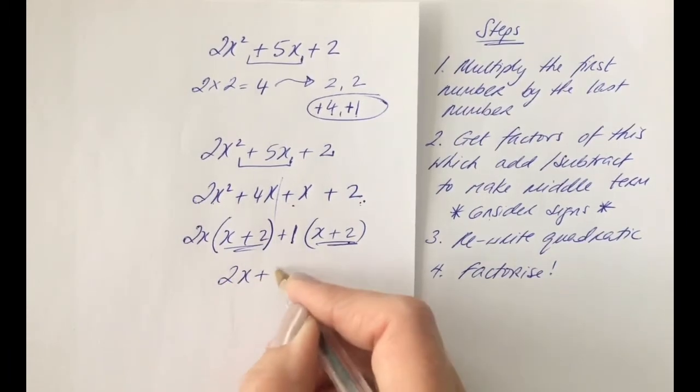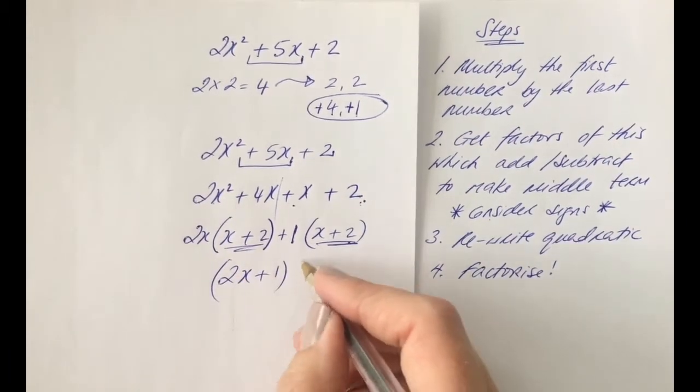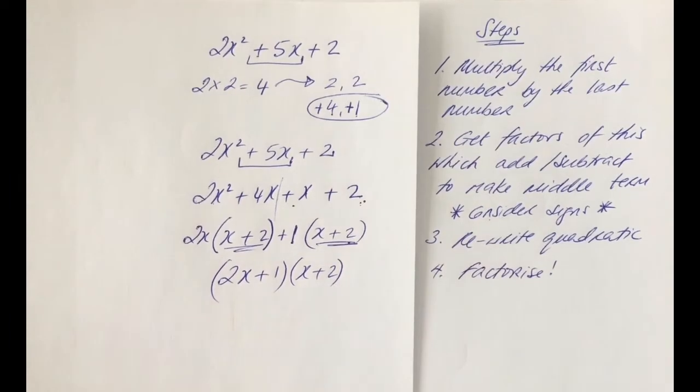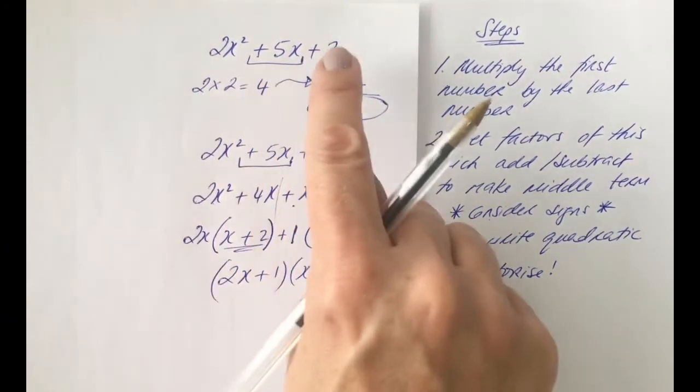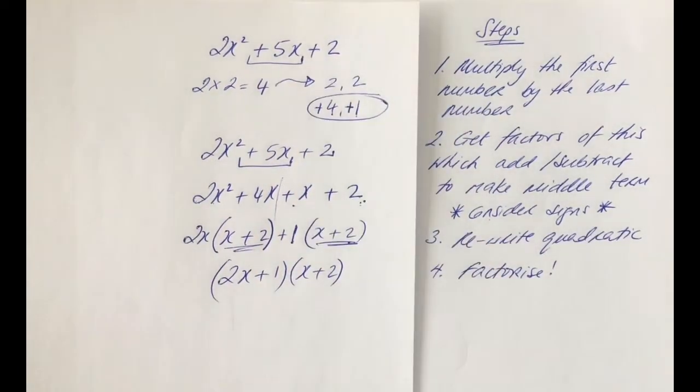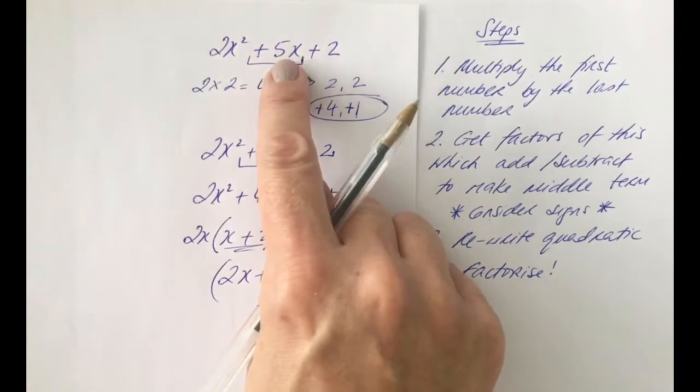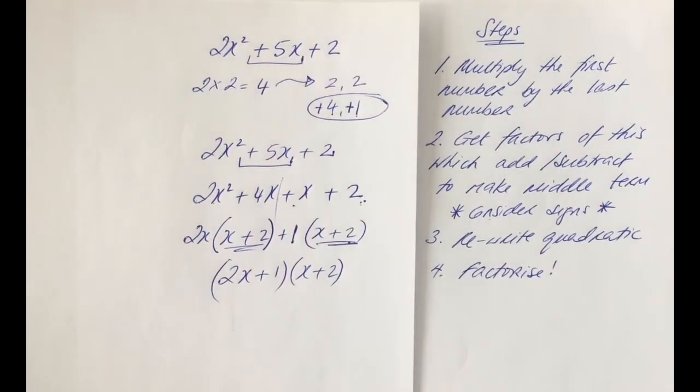And that means, then, pulling together the 2x plus 1 and the repeated bracket is always the second bracket. 2x plus 1 in one bracket. x plus 2 is the other. This is the factorized version of 2x squared plus 5x plus 2. In other words, when you multiply out these double brackets, you will end up with 2x squared plus 5x plus 2.